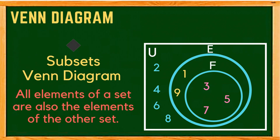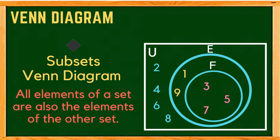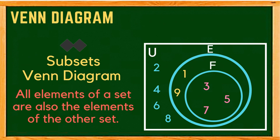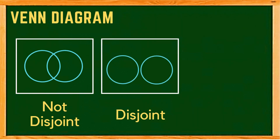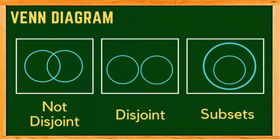This Venn diagram is called a subset diagram, because all elements of set F are also elements of set E. To summarize, we have three kinds of Venn diagrams: first, not disjoint — used when the sets have common elements; second, disjoint — used when the sets have no common elements; and third, subsets — used when all elements of one set are also elements of another set.